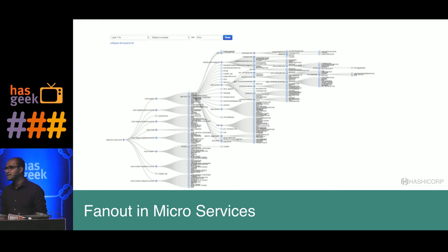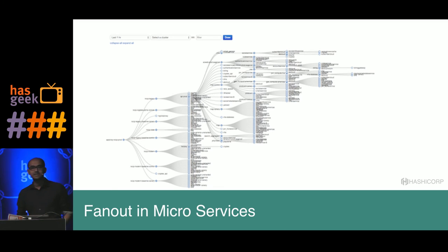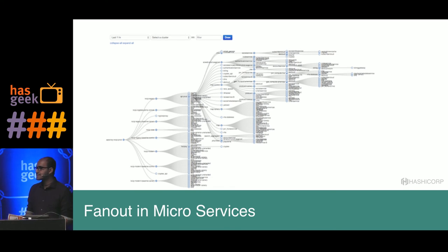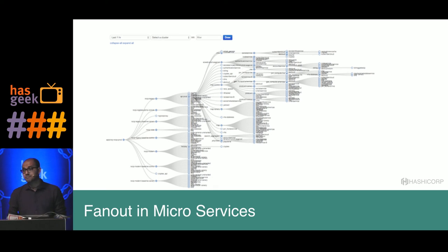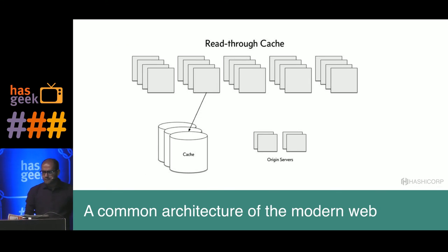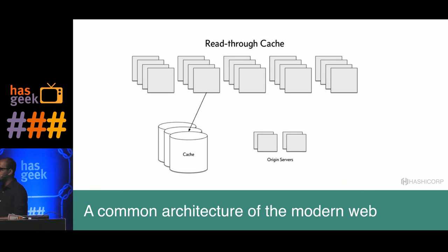There is no silver bullet — microservices are not going to make you more reliable. Instead, you're dealing with other kinds of issues. At the same time, with service-oriented architecture and microservices, you can get to the scale where you run things for millions of users. There are no silver bullets in computing, but if there were one, caching would probably be the closest.